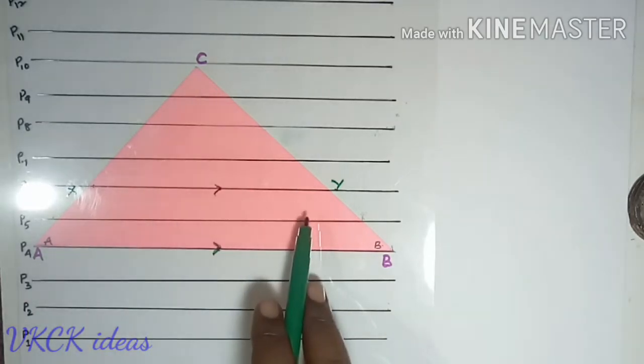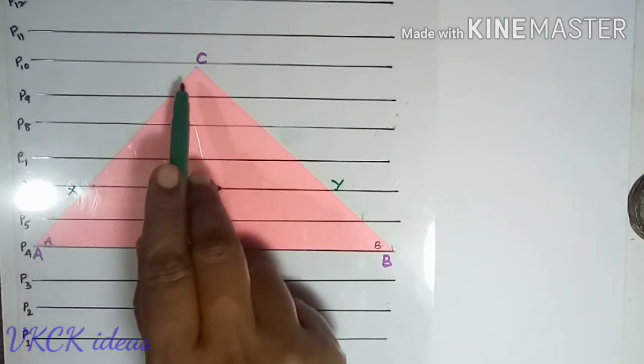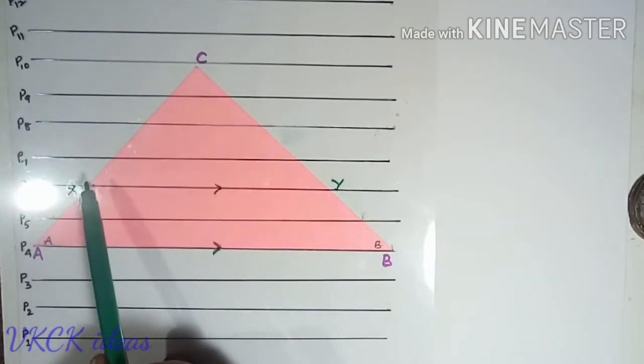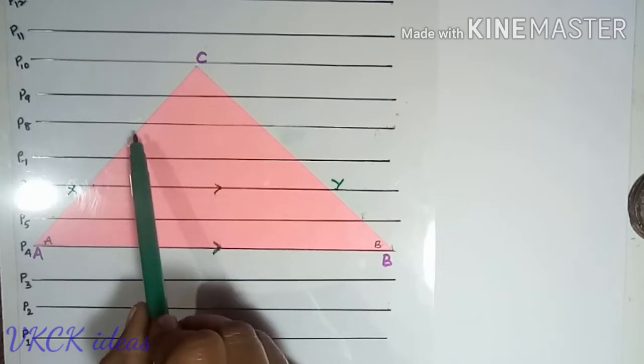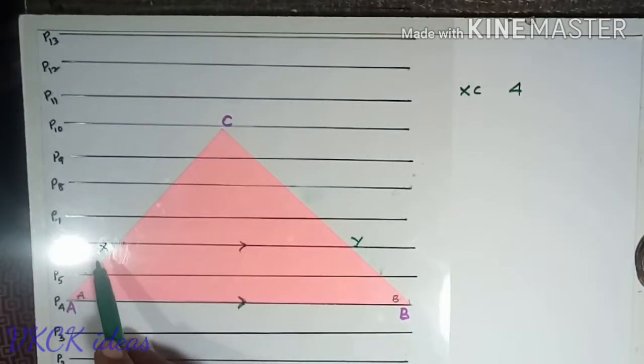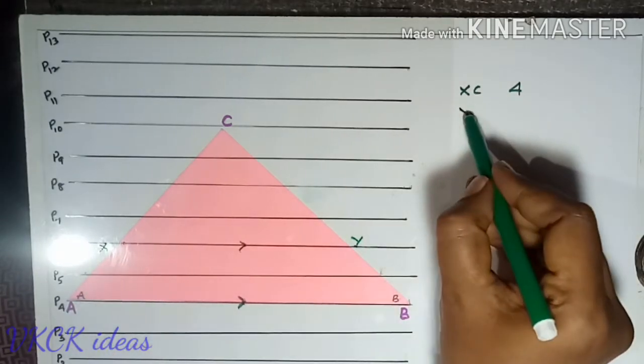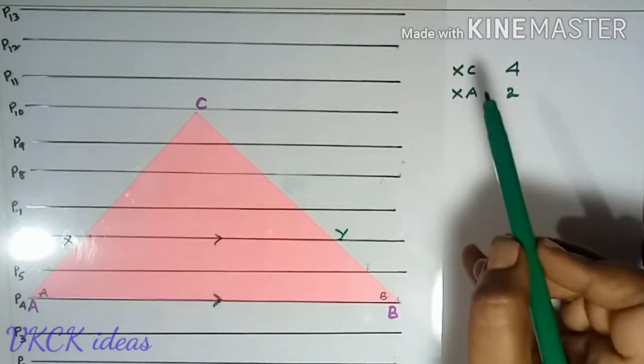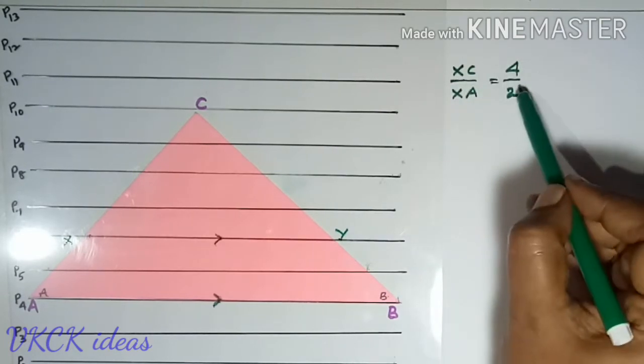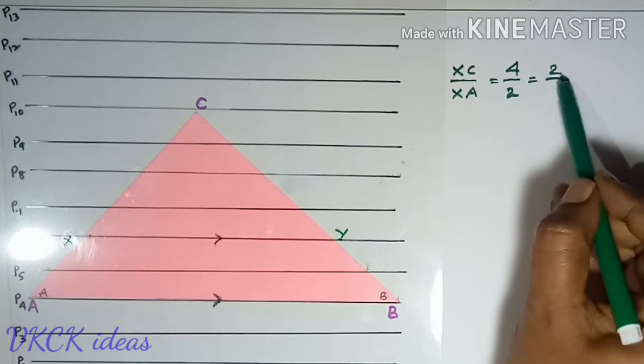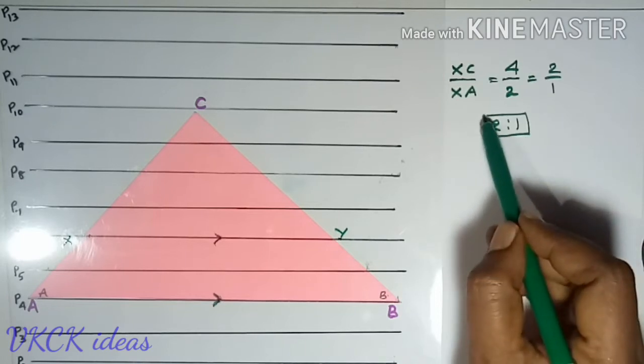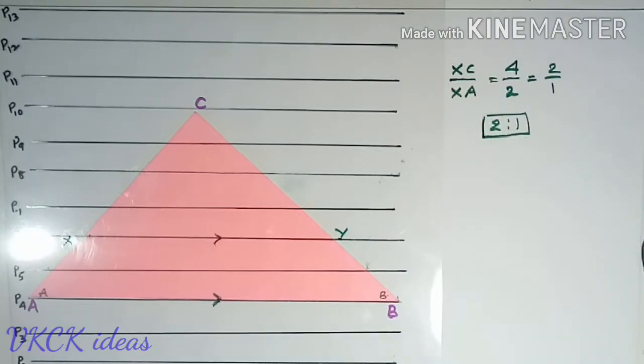This line XY has divided the line AC in such a way that XC has 1, 2, 3, 4 equal parts and XA has 2 equal parts. If I write the ratio of XC and XA, it will be 2 by 1, or 2 is to 1. Okay, we observe one side.